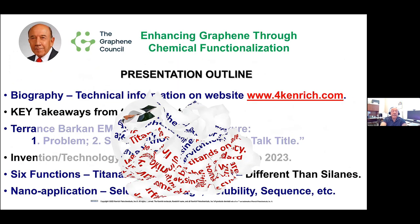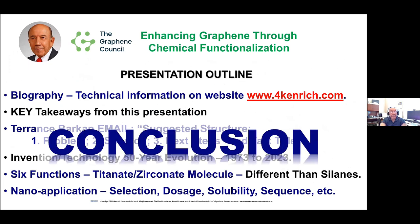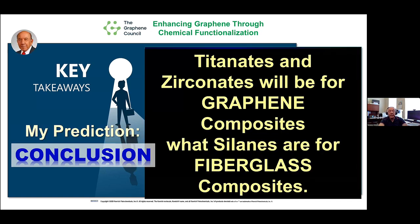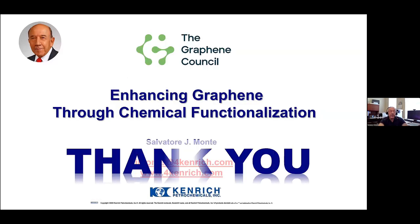That's the conclusion of my talk today — a very fast outline in about 180 slides. My conclusion is that you can form atomic monolayers on carbon, you can react in situ in the water phase or in the organic phase, you can do 1.5-nanometer deagglomeration, and you use your nanotechniques. The titanates and zirconates will be for graphene composites what silanes are for fiberglass. Thank you.